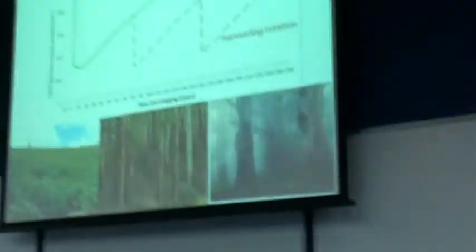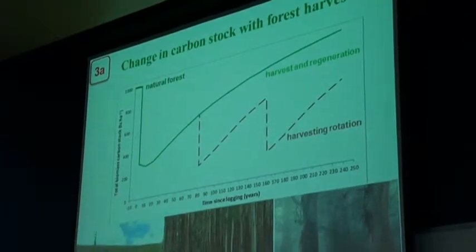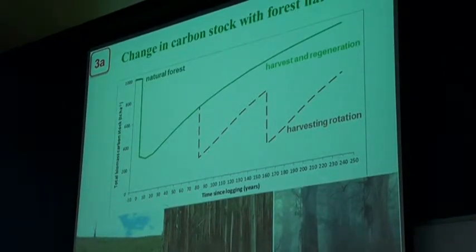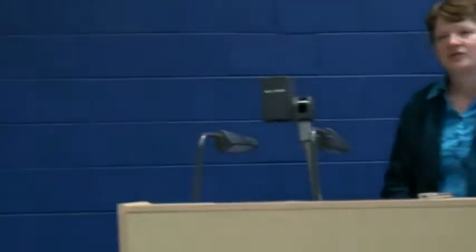The third concept is about how these carbon stocks change, specifically in the forest, comparing a natural forest with a forest used for timber harvesting. We need to start at the level of what the natural forest was. In this case, it's about 100 tonnes of carbon per hectare—a real example from mountain ash forests in Victoria.